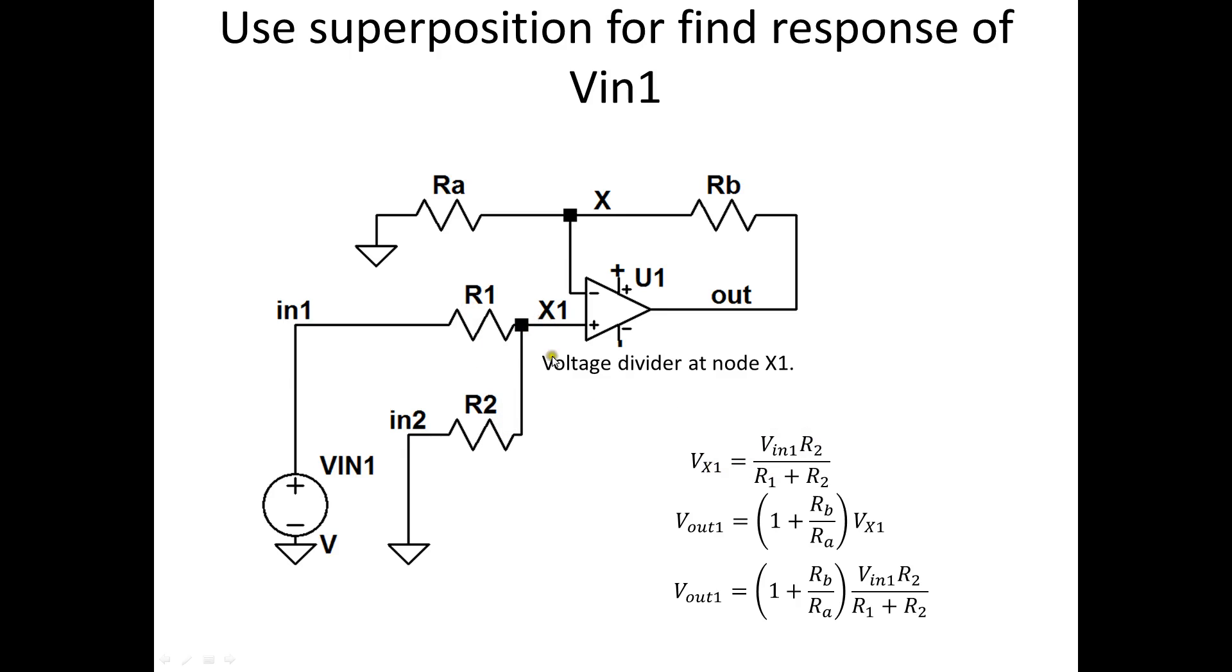And so we really have a voltage divider given by R2 divided by R1 plus R2 times Vin. So Vx1, in this case, it's not zero. It's the voltage division between R1 and R2. And then when we substitute that in, we get Vout equals 1 plus Rb over Ra times the voltage division of Vin1.